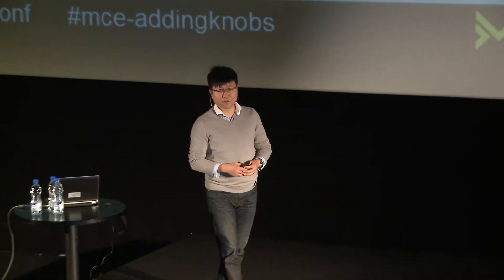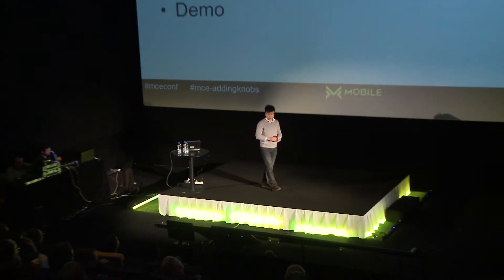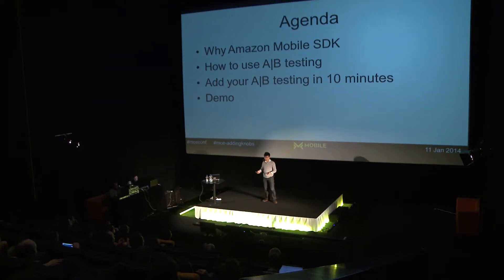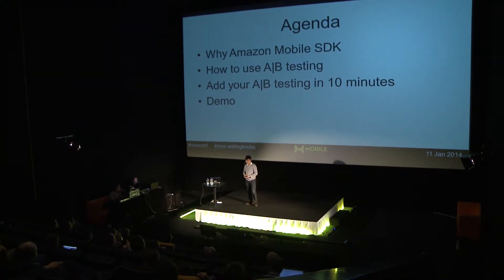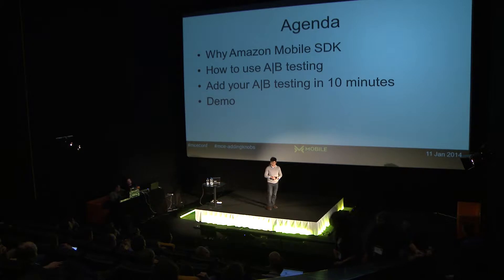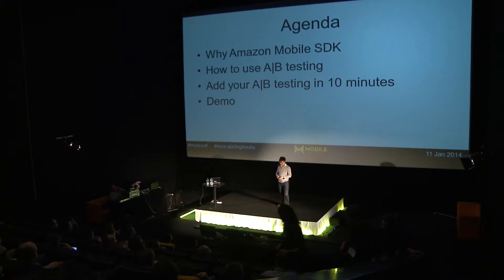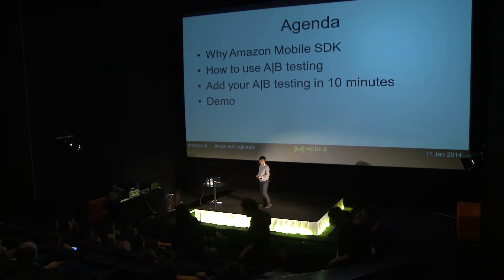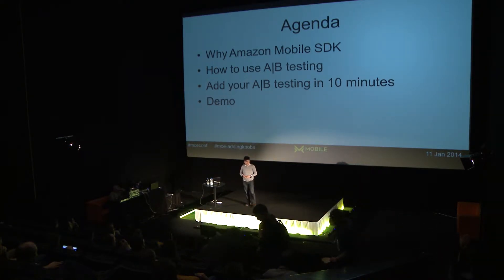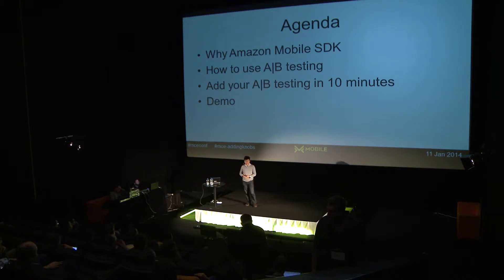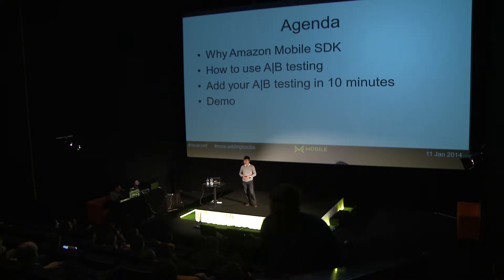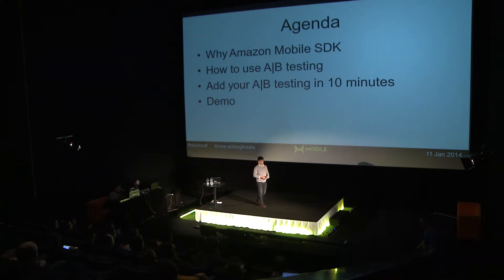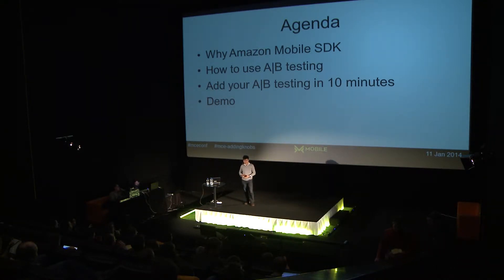Today the agenda looks like this. First, I want to give you a quick introduction and answer your questions about why you should choose Amazon services or the Amazon Android SDK. The second part will cover how to use A-B testing in your application — and by the way, it's not just for Android, it's cross-platform, so iOS developers can use it as well. The third part will cover how to add the A-B testing service to your apps within 10 minutes, with a live demo showing code running on the emulator.